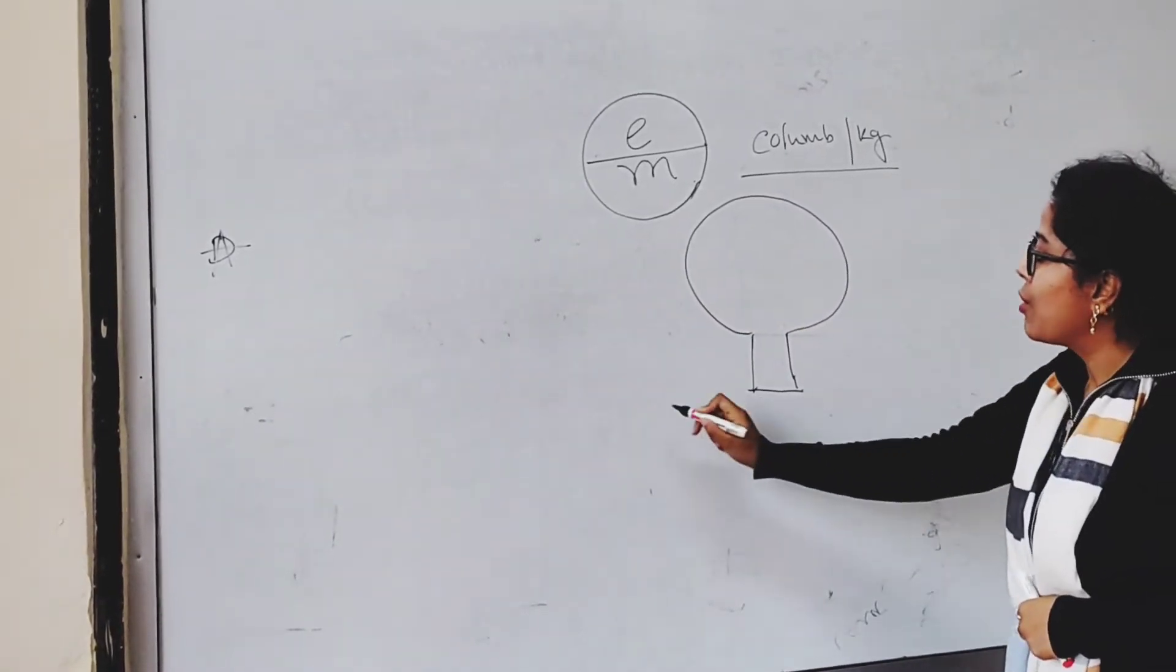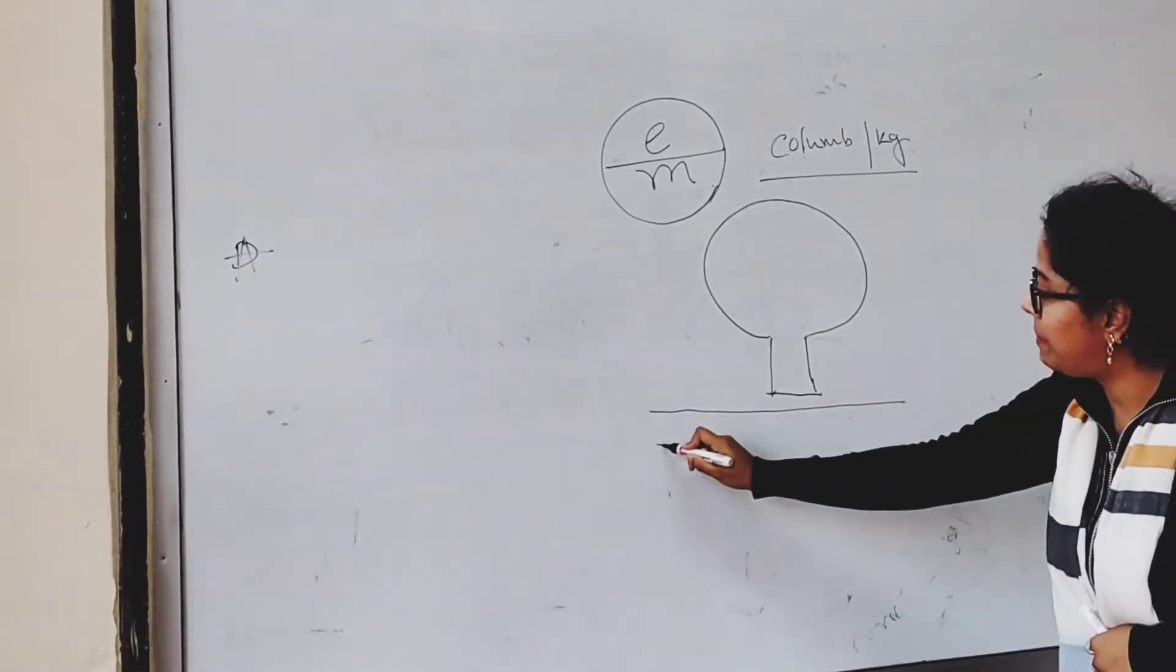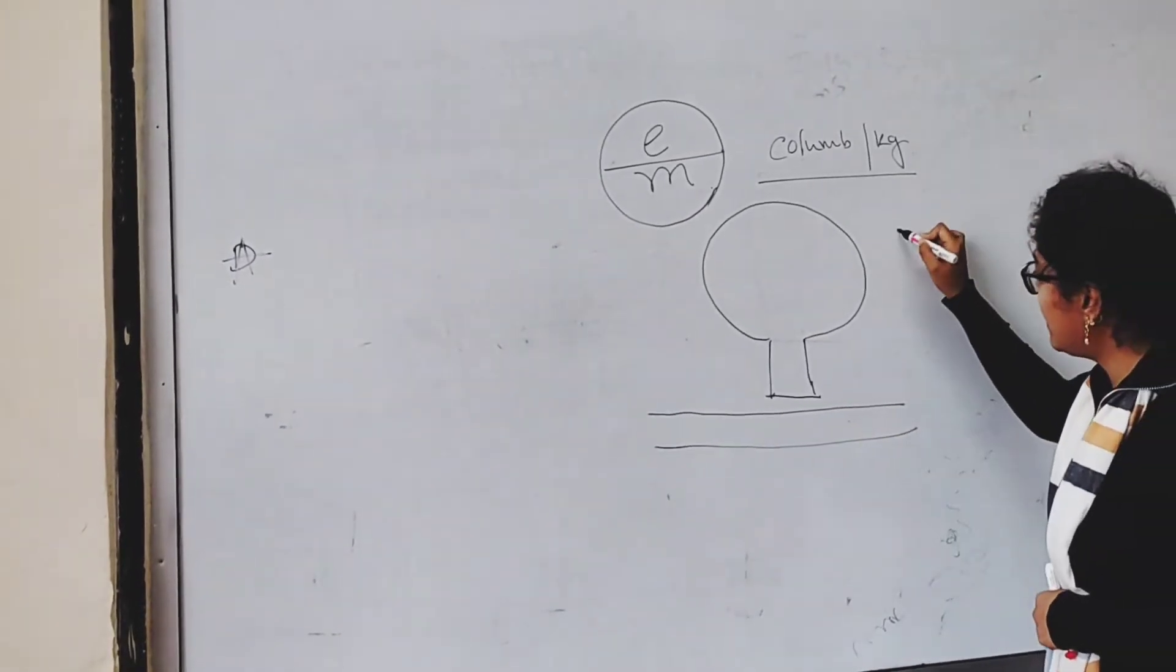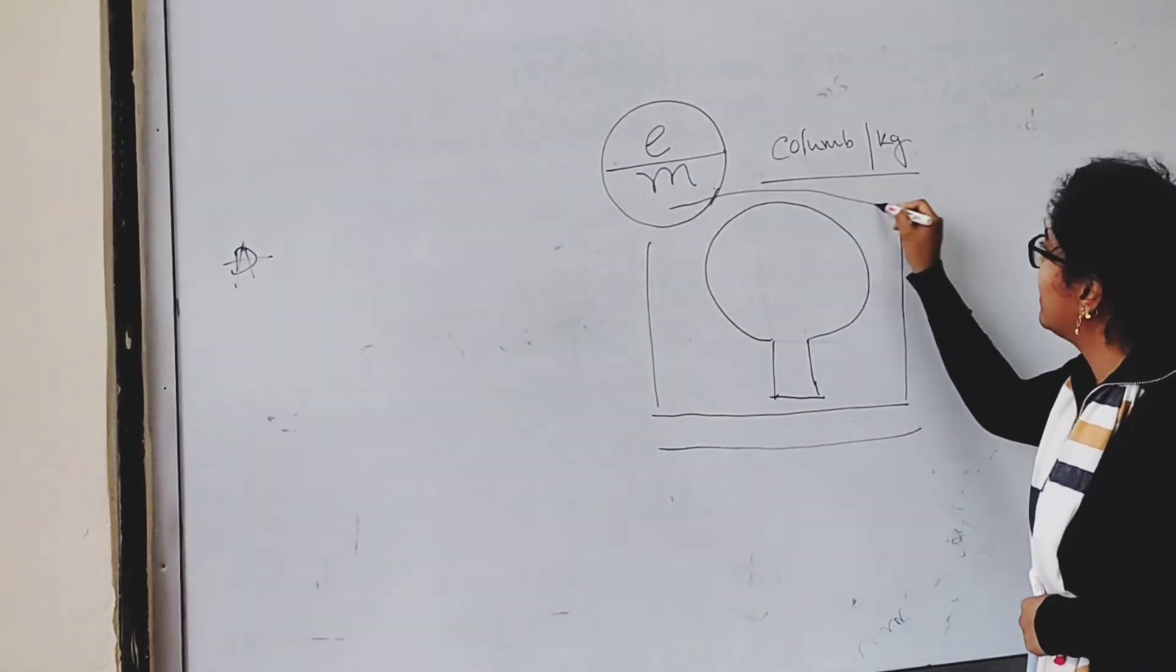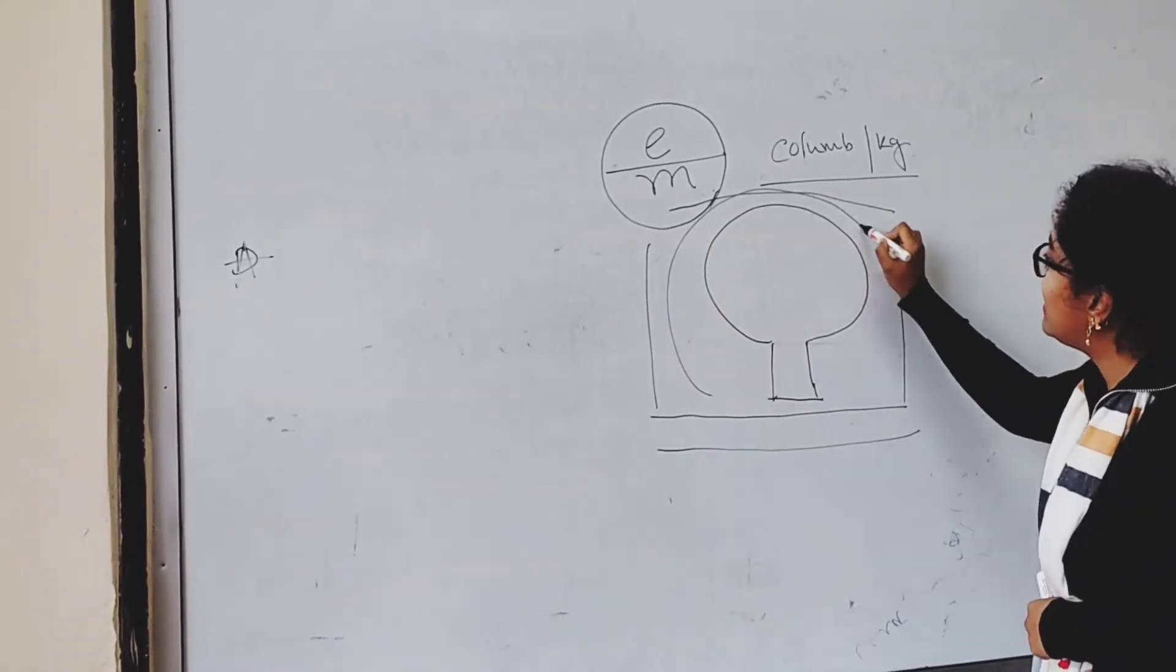The whole setup has been placed inside a circular Helmholtz coil to create the magnetic path.